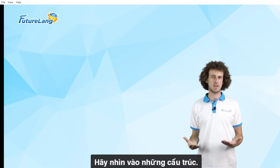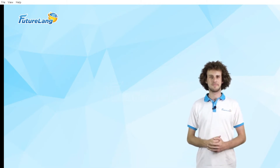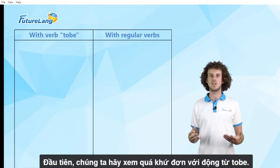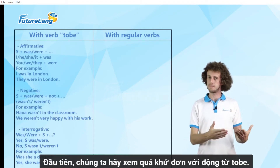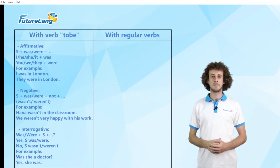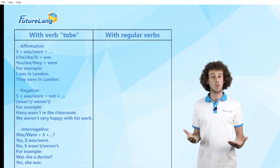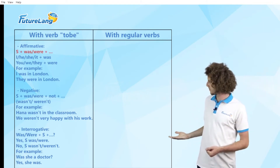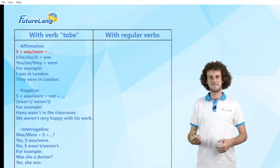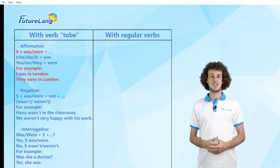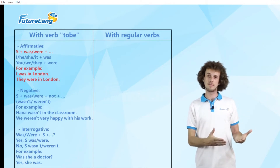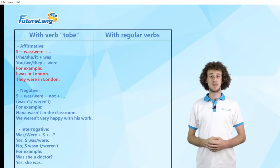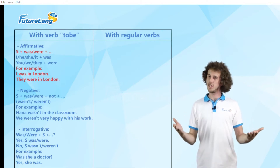Let's take a look at the structures. First, let's look at the past simple with the verb 'to be.' For the affirmative structure, for example: 'I was in London.' 'They were in London.'